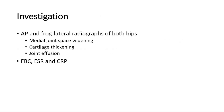For investigations, radiographic changes can be seen usually after 3 to 6 months of the disease process. X-rays, which include AP view and frog lateral X-rays of both hips, can be performed. Radiographic changes will begin with medial joint space widening, cartilage thickening, and joint effusion may also be seen. Other investigations include full blood count, ESR, and CRP.